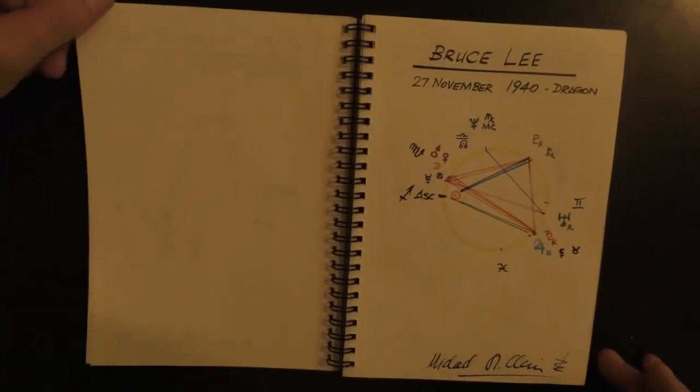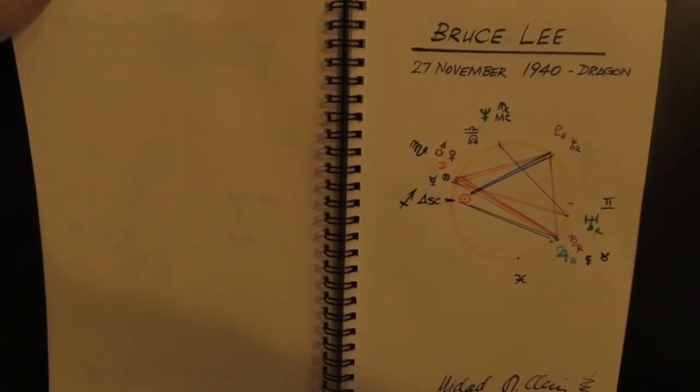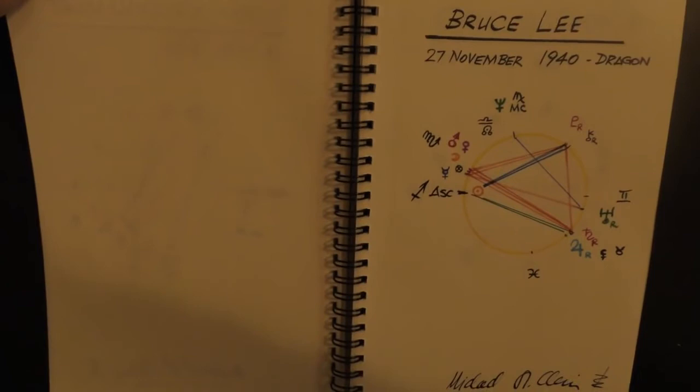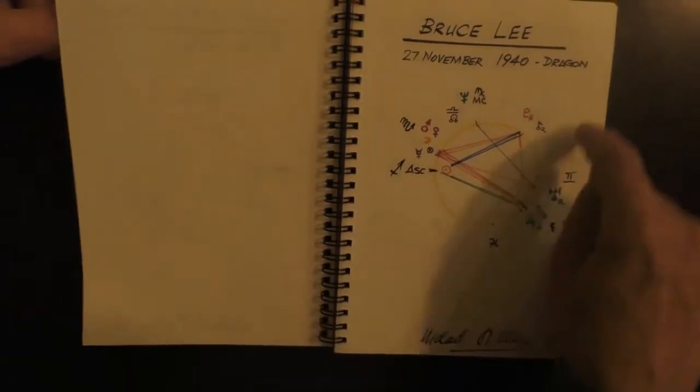Bruce Lee, the master. Sagittarius, and he too, moon in Scorpio. All these intense guys who achieved so much, they have this Scorpio moon. He was a dragon, of course, obviously, pinnacle.